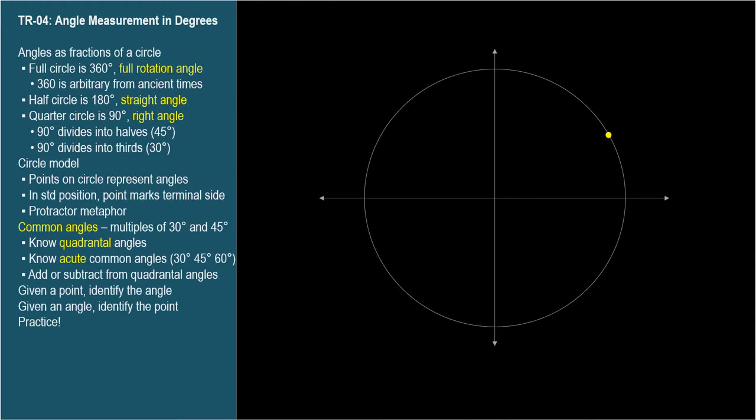In trigonometry, a point on a circle centered at the origin represents the standard position angle whose terminal side passes through the point. Let me see that again differently, because it's so important.